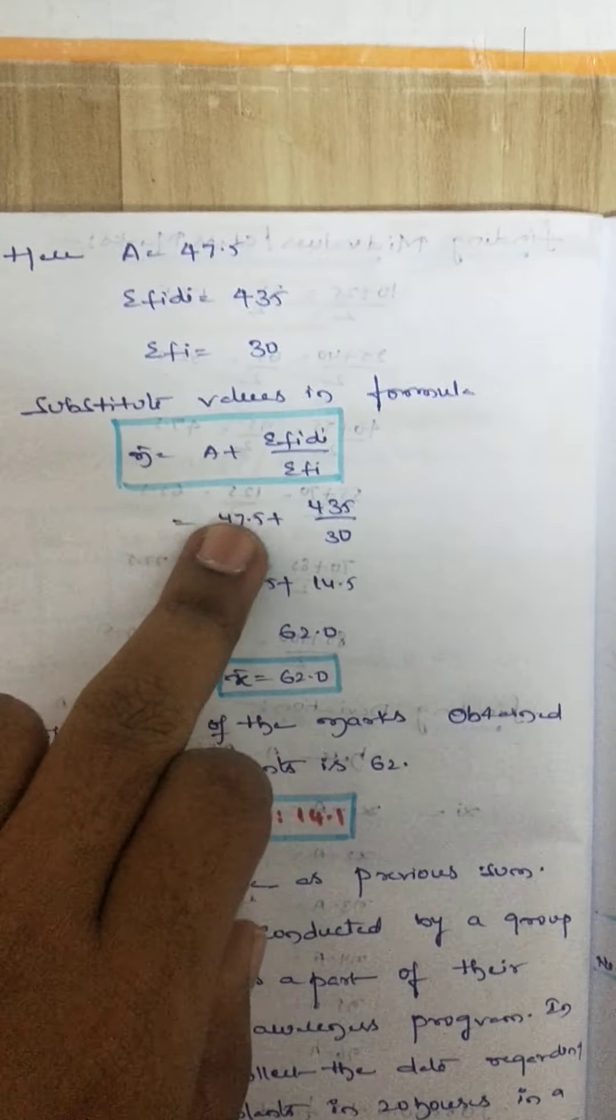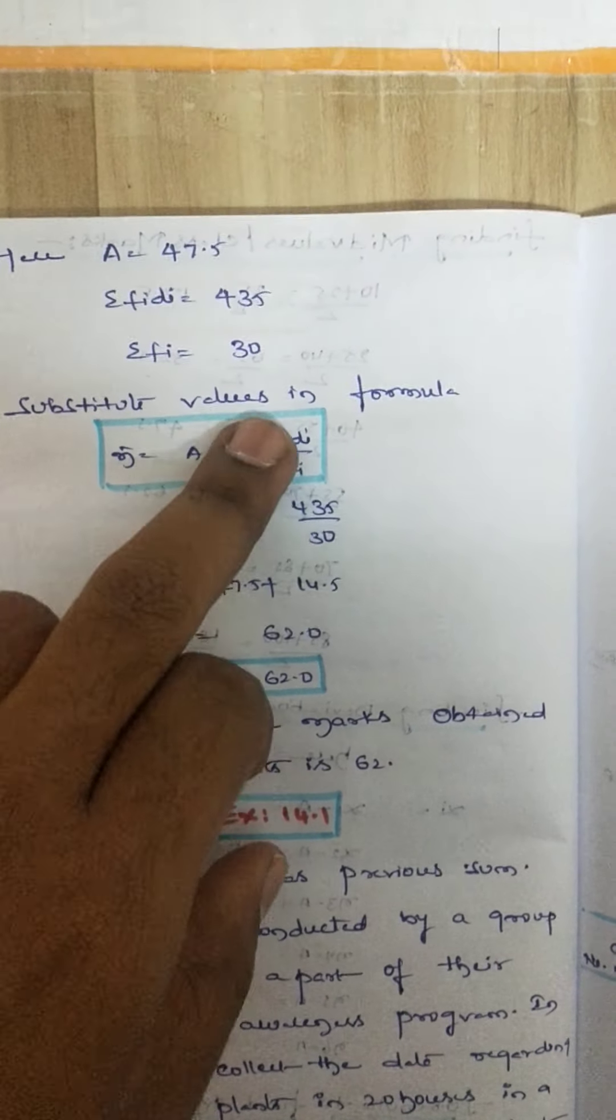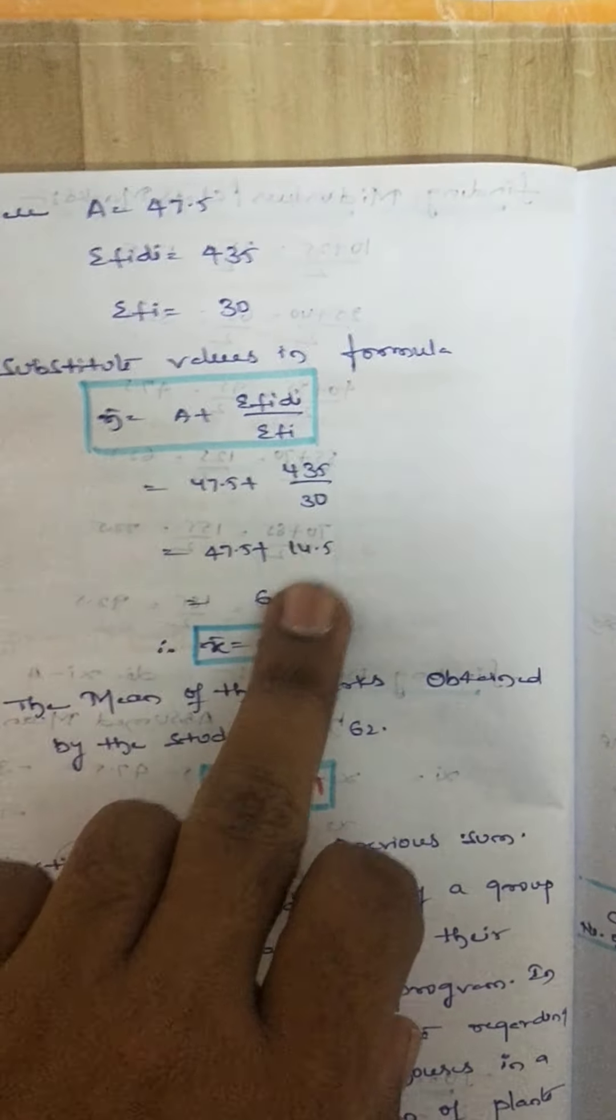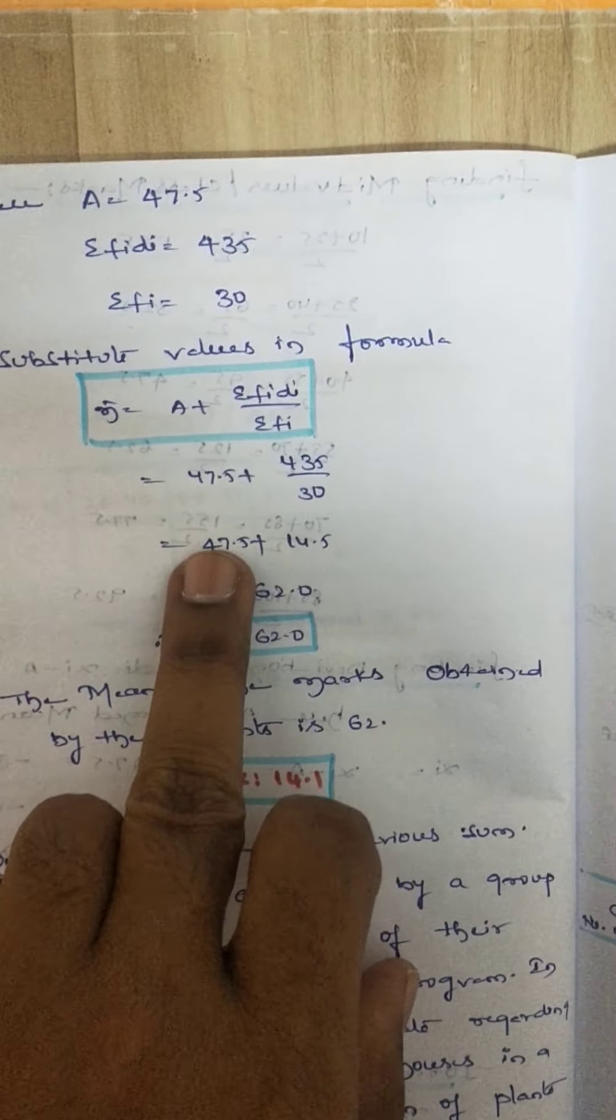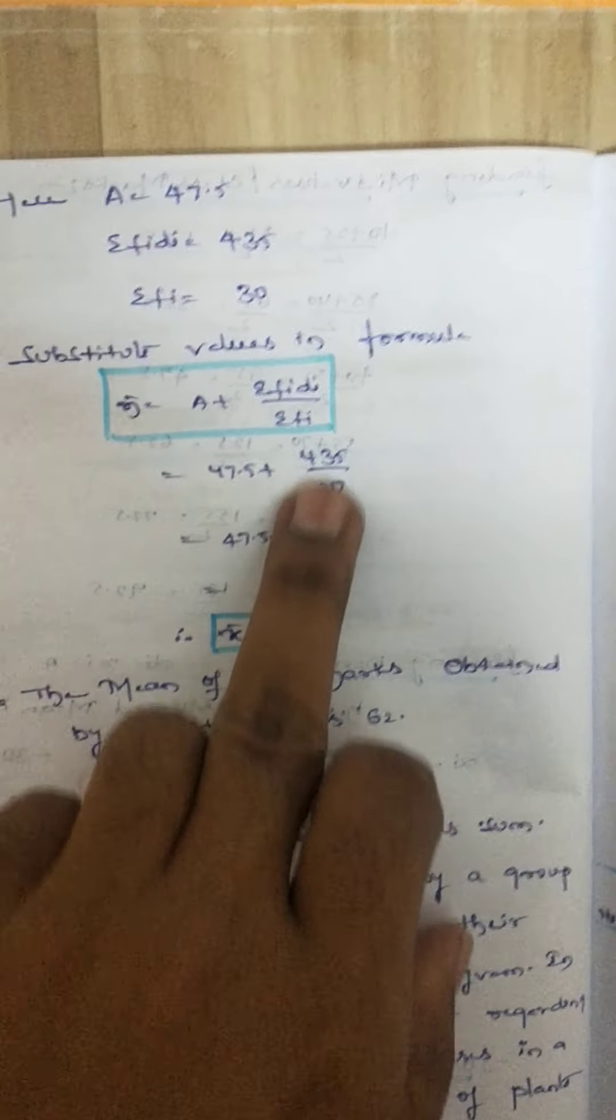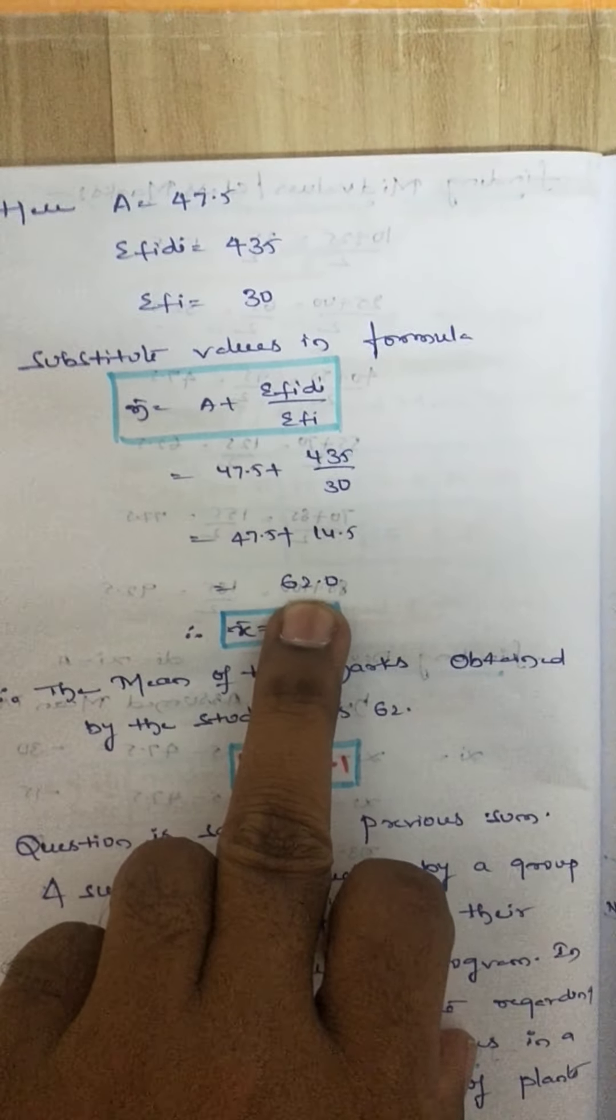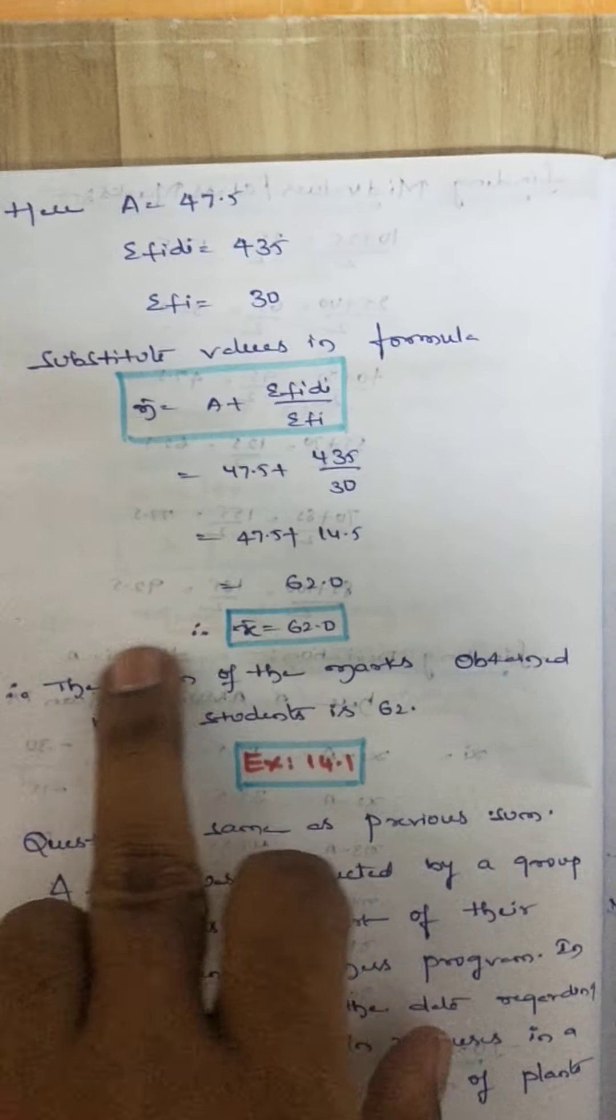Substitute the values in the formula. A is 47.5, and FiDi is 435 by 30. So this part we get as 14.5. Then add these two: 47.5 plus 14.5, that means 62. So this is the mean of the given data, students.